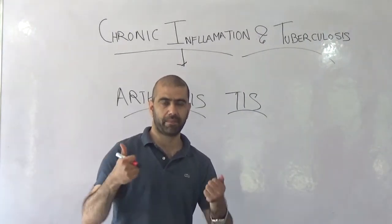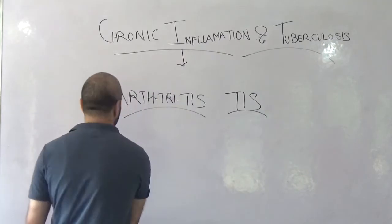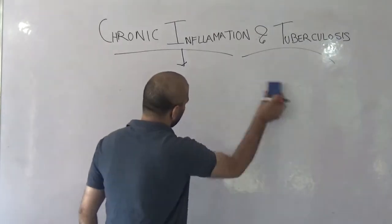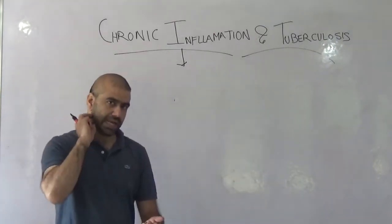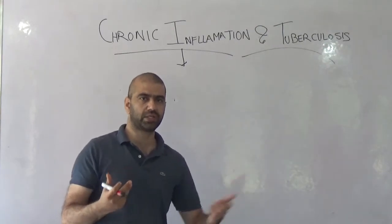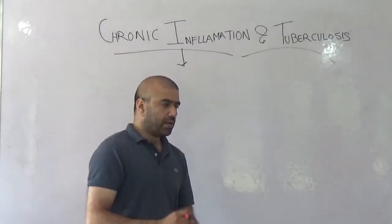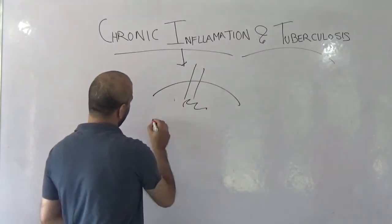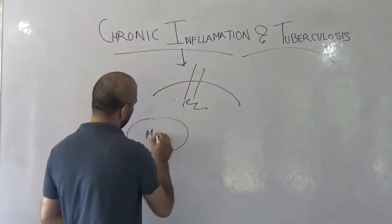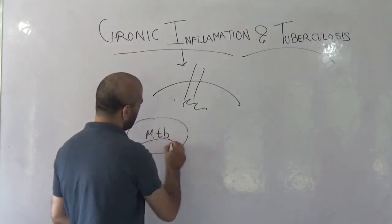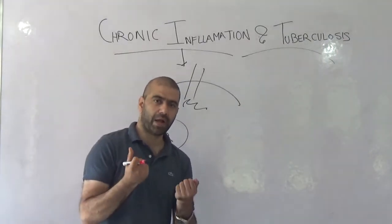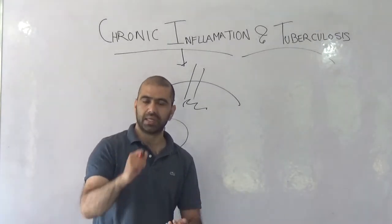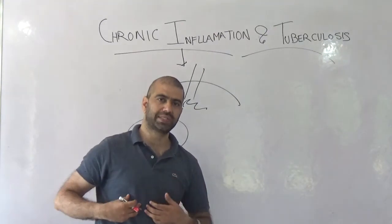So this inflammatory response, which is actually beneficial to us when tissue injury takes place or when bacteria are inside the blood or tissues — acute inflammation is beneficial. But if the inflammation prolongs, the same friend will become a foe. Let us see this by taking the example of Mycobacterium tuberculosis.